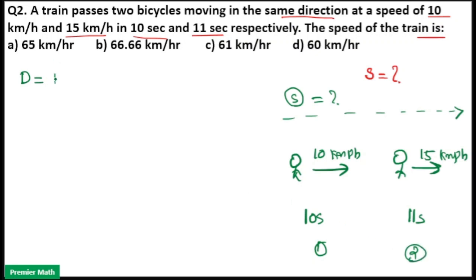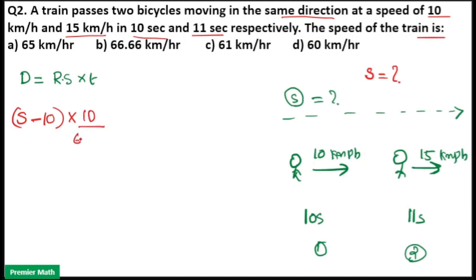Distance is equal to relative speed into time — it is relative speed because there are two bodies involved. In the first case, the speed of the train minus the speed of the first cyclist equals 10 km per hour. Both are moving in the same direction, so (S − 10) into 10 seconds — converting to hours: divided by 3600. This gives the distance covered while overtaking the first cyclist.